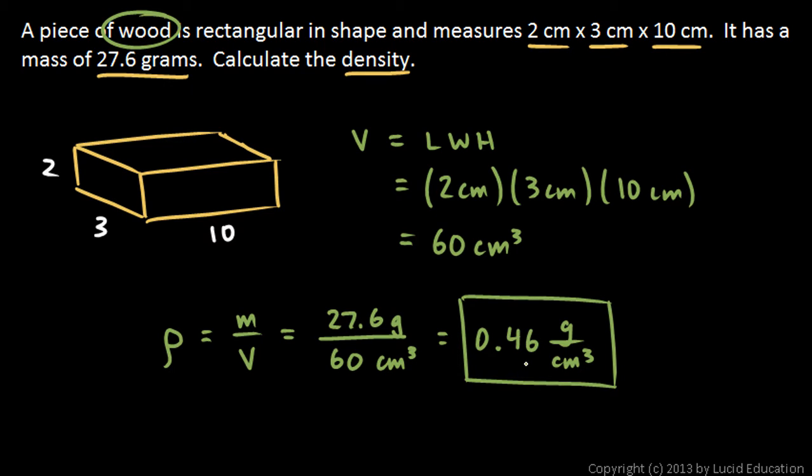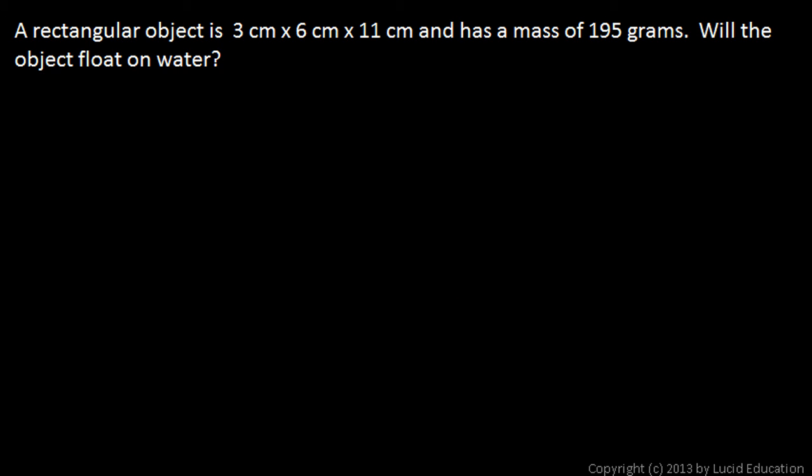And in the next problem we're told that a rectangular object is 3 centimeters by 6 centimeters by 11 centimeters and has a mass of 195 grams. Will the object float on water? So what we'll do in this one is calculate the density and just compare it to the density of water. If it is more dense than water, it will sink; if it's less dense than water, it will float.